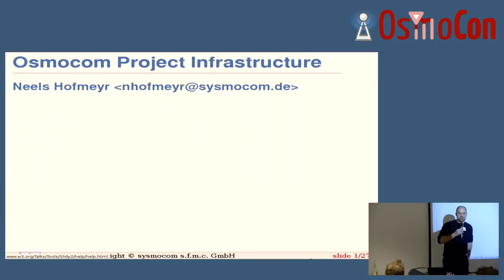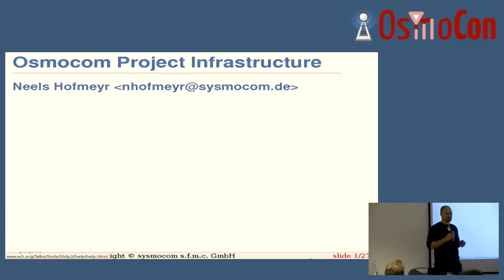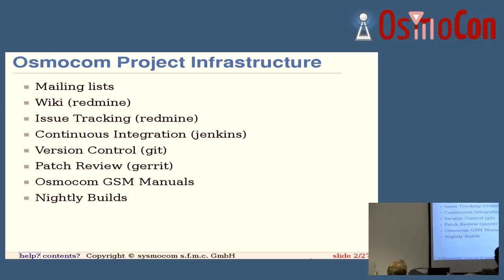Project infrastructure is the bread and butter of every day working with Osmocom. I'm probably going to miss a few details — if you have any questions or anything that is only obvious to me and not to you, please interrupt or ask afterwards. I'm going to talk about your typical project infrastructure: mailing lists, wiki, issue tracking, continuous integration, version control, patch review, our manuals, and our nightly builds.